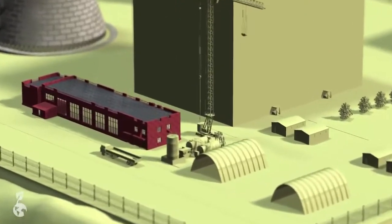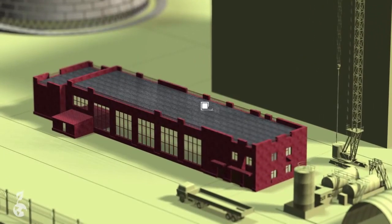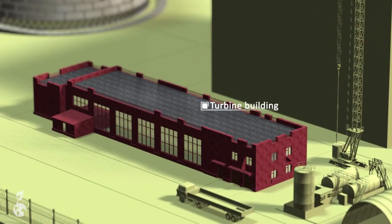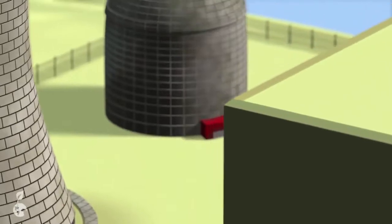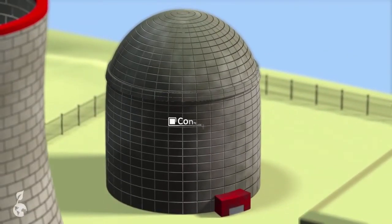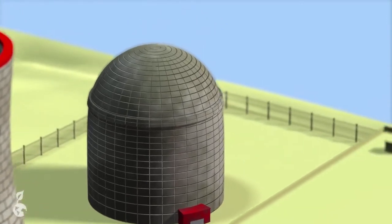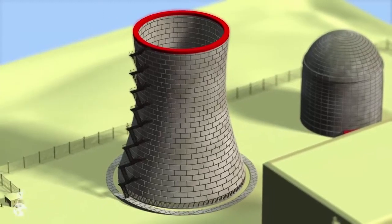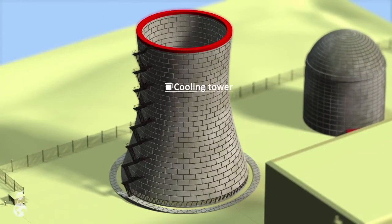The turbine building houses several turbines as well as the generator necessary for electrical power generation. The containment building where the nuclear reactor is housed is made of meter-thick reinforced concrete. Inside this building, nuclear reactions take place where water is heated up.